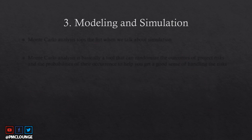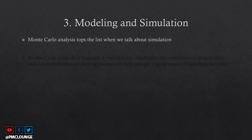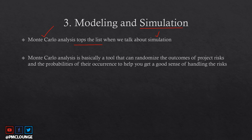Number three is modeling and simulation. Monte Carlo analysis tops the list whenever simulation is mentioned in your PMP studies. Monte Carlo analysis is a tool that randomizes the outcomes of project risks — it randomizes the outcomes and even the probabilities of their occurrence. This helps you get a good sense of how you are going to handle the risks and what all the possibilities are in terms of outcomes, which is where Monte Carlo analysis comes in handy.